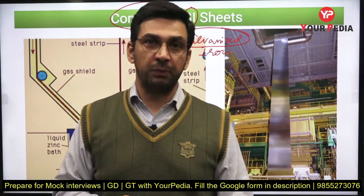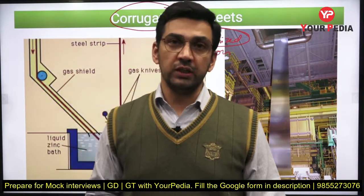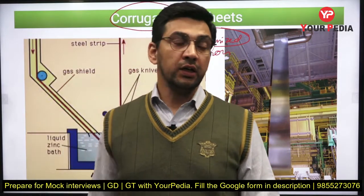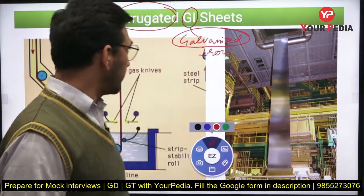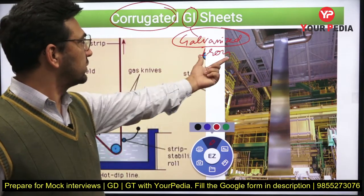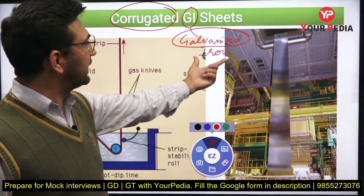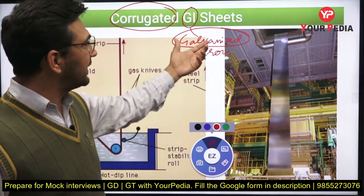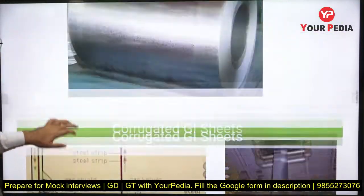Galvanization is a process where you create a layer of a particular metal on the base metal. Here we specifically talk about zinc. In steel sheets, we normally do a coating of zinc to protect them from rusting. Iron is a very weak material practically, so when we add carbon we get steel. So basically these are steel sheets only, but they have been galvanized.